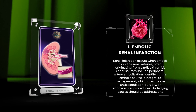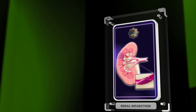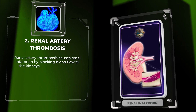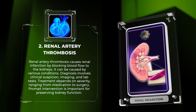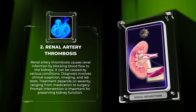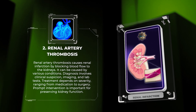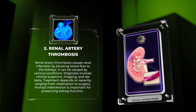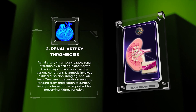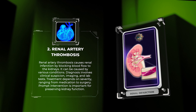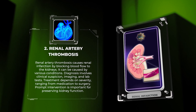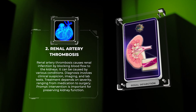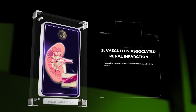Underlying causes should be addressed to prevent recurrence. Renal artery thrombosis causes renal infarction by blocking blood flow to the kidneys. It can be caused by various conditions. Diagnosis involves clinical suspicion, imaging, and lab tests. Treatment depends on severity, ranging from medication to surgery, and prompt intervention is important for preserving kidney function.